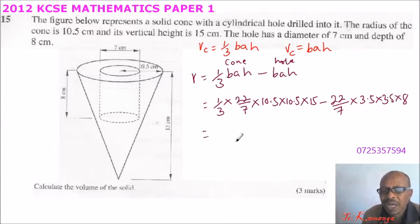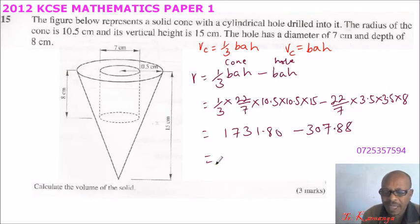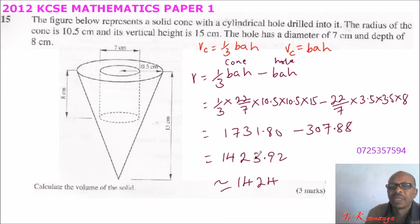So you can just use your calculator and work it out. So when you work out the first part here, you get 1731.80. And the other one, when you compute using your calculator, you get 307.88, which equals to when you subtract, you get 1423.92. So we can simply say it's around 1424 when you round off to the nearest whole centimeter.